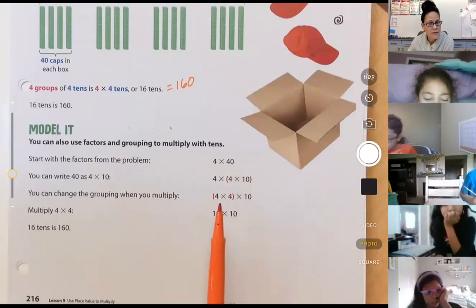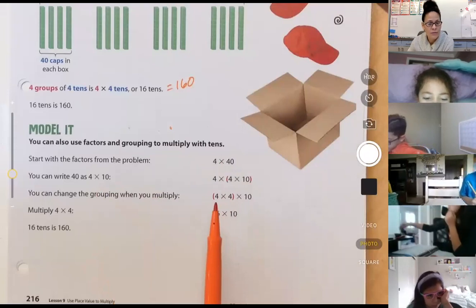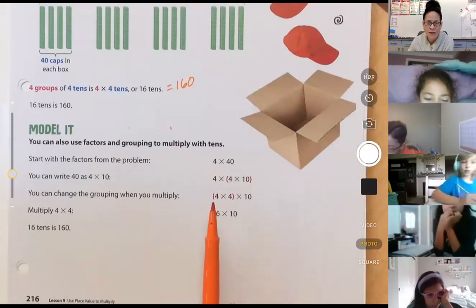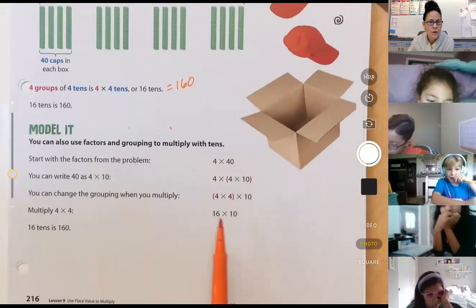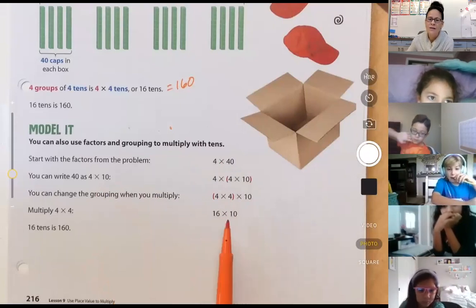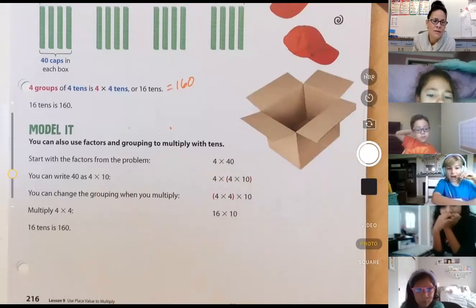You could also change the grouping. Remember what the associative property says? You can regroup the factors, it's not going to change the product. Or you can do 16 times 10. So many different ways, friends, so many different ways you could do this.